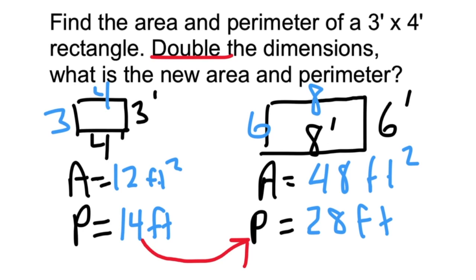How does this doubling the dimensions of the rectangle affect the perimeter? The perimeter changed by timesing it by two. We double the dimensions, we're going to double the perimeter.